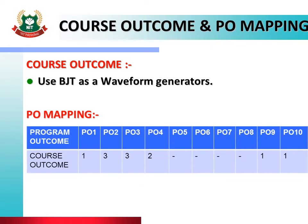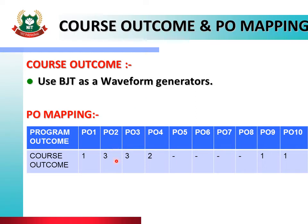This table shows 10 program outcomes (POs), from PO 1 to PO 10, related to our branch Electronics and Telecommunication. We need to map those 10 POs with this course outcome — meaning which POs are satisfied by this course outcome. PO 1 relates to basic engineering and is mapped at level 1. PO 2 relates to discipline knowledge and is mapped at level 3, because studying waveform generators upgrades our Electronics and Telecommunication knowledge.